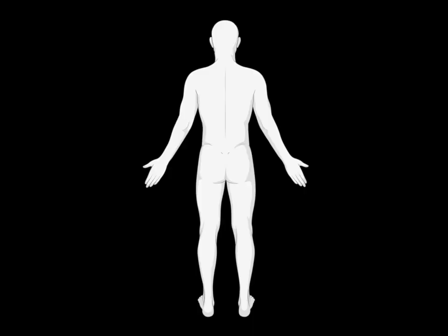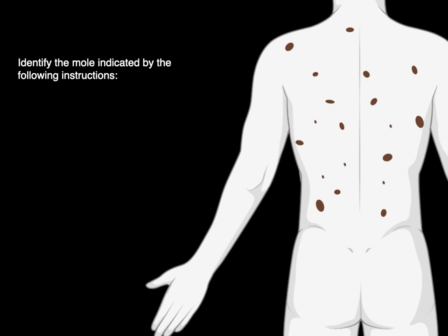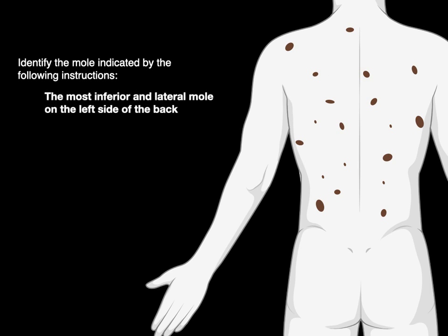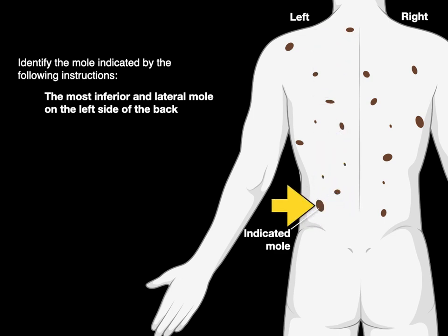How about this? We take a close-up of the back of this illustration. I want you to identify the mole indicated by the following instructions: the most inferior and lateral mole on the left side of the back. There's the left and right based on anatomical position — it's the patient's left or right — and we go to the most inferior and lateral. That's the indicated mole.